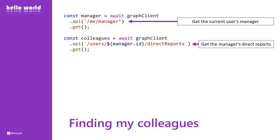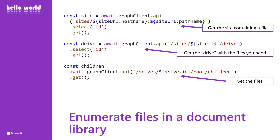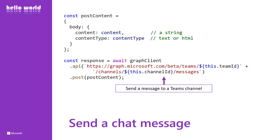The Microsoft Graph is just a REST API, meaning it's easy to call from any web browser or modern development environment. Here are the calls I used in the demo. To get my colleagues, I looked for my manager and then navigated to his or her direct reports. To read the calendar was a single call with a filter on date. To enumerate the files in the contracts library, I had to go get the library first — a couple of steps — but I could cache that information if I wanted to, and then it's fairly straightforward to get the files inside. And to send a message into a Teams channel was pretty simple too.